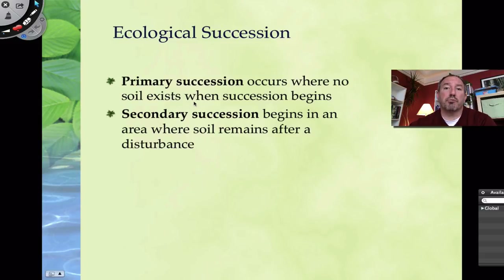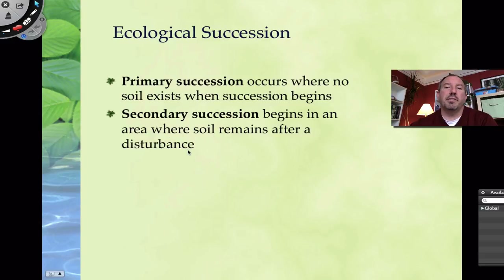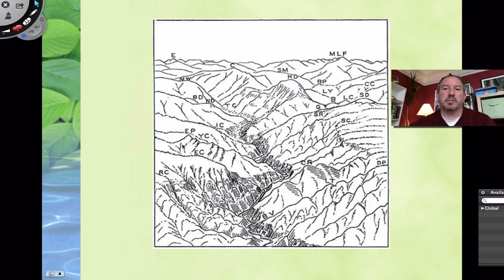There's something called primary — which means first — and secondary, which means second. Primary means there's a place where there's no soil at all, and there's a gradual transition from that rock into maybe a complex community like a forest. Secondary succession is where there's already existing soil. Maybe there was a forest and some sort of disturbance — a fire that burned down that vegetation — and then the next series of communities come in and replace it.